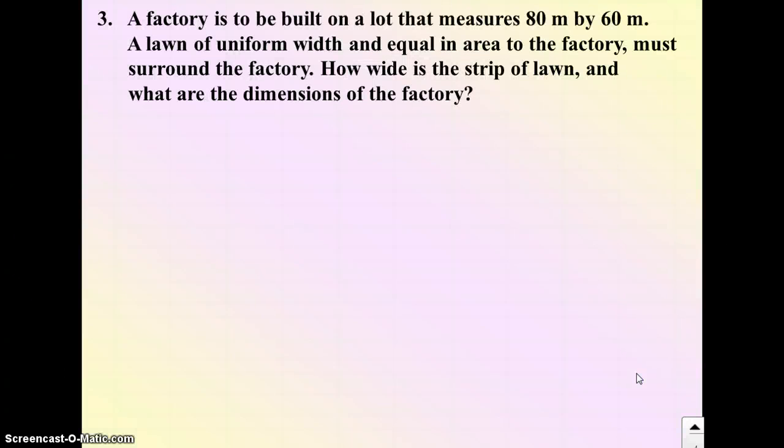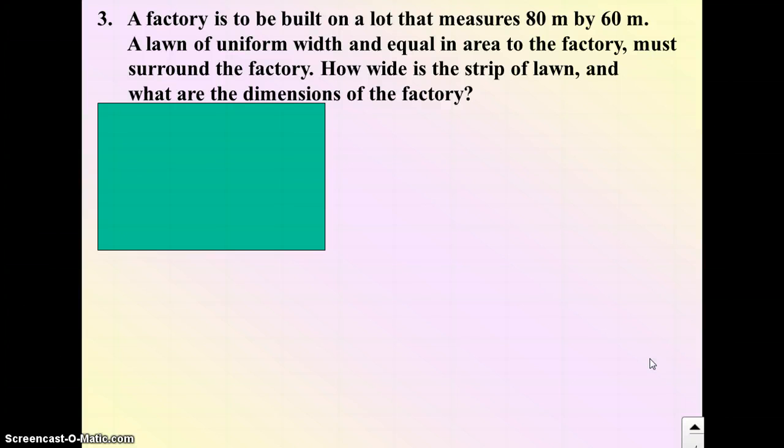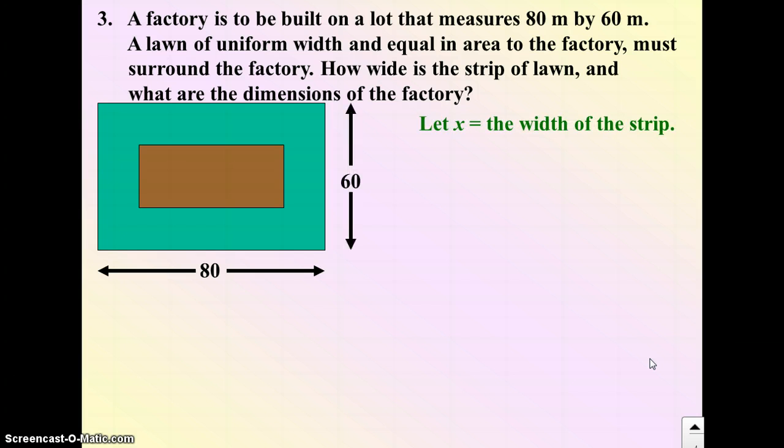Example 3. A factory is to be built on a lot that measures 80 meters by 60 meters. Lawns of uniform width and equal in area to the factory must surround the factory. How wide is a strip of lawn, and what are the dimensions of the factory? So I think a diagram here might be a good idea. So we say that the lot is 80 by 60, and we're going to let the width of the strip of grass or lawn that's around it be a width of x.